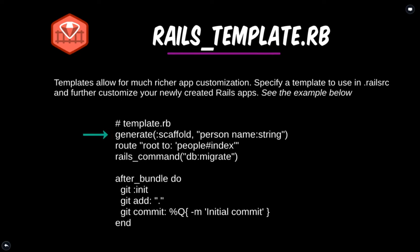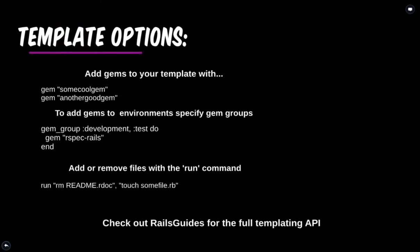There's a generate option — you can generate a scaffold, for example, person with a name string attribute. You can set the root route as the people index. There's a rails command for db:migrate, so you can automatically have these things done in the template. To add a gem to your project, you just use the word gem followed by the name of the gem in quotes. If you want to add a gem to a certain environment, like rspec-rails in development and test, you can use gem_group :development, :test do, gem 'rspec-rails' end. This will add rspec-rails to your Gemfile only in those groups.